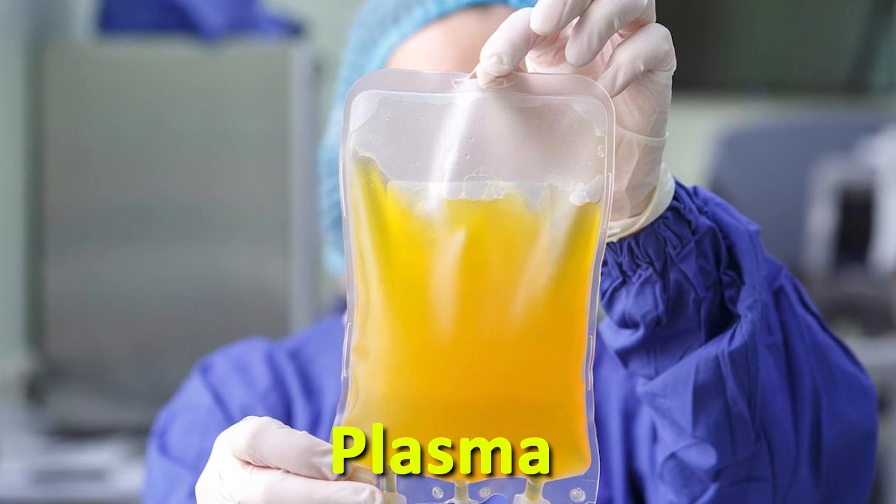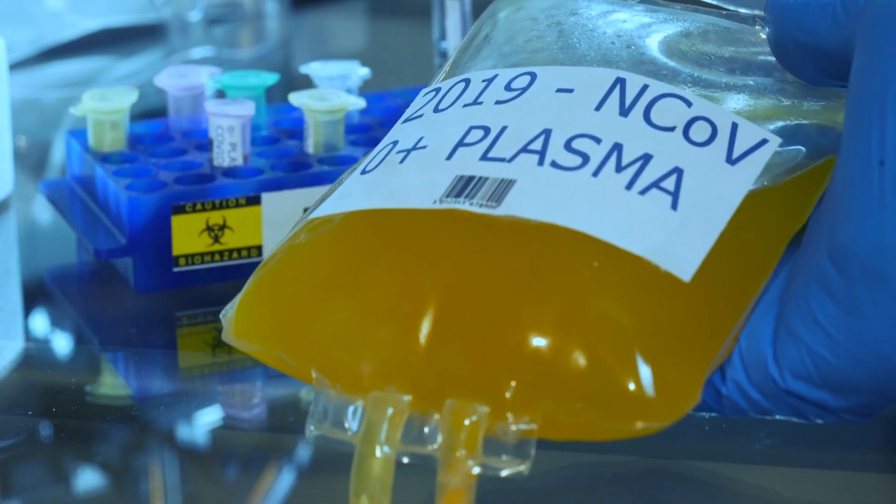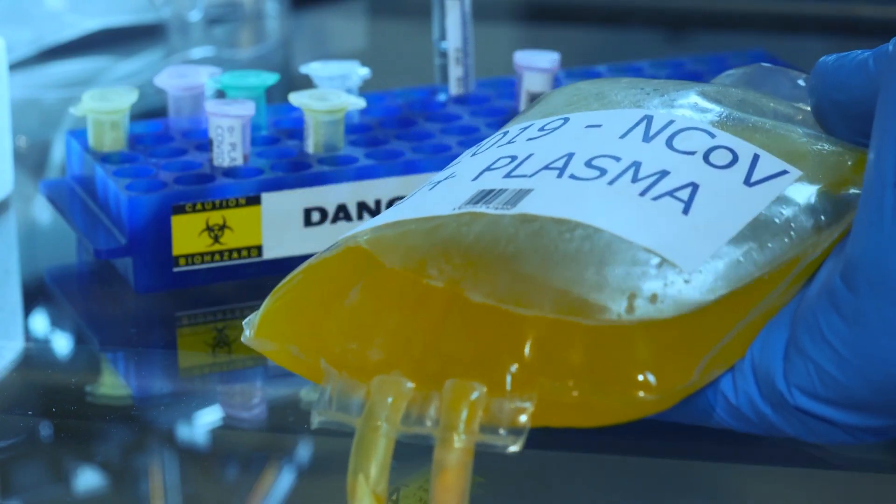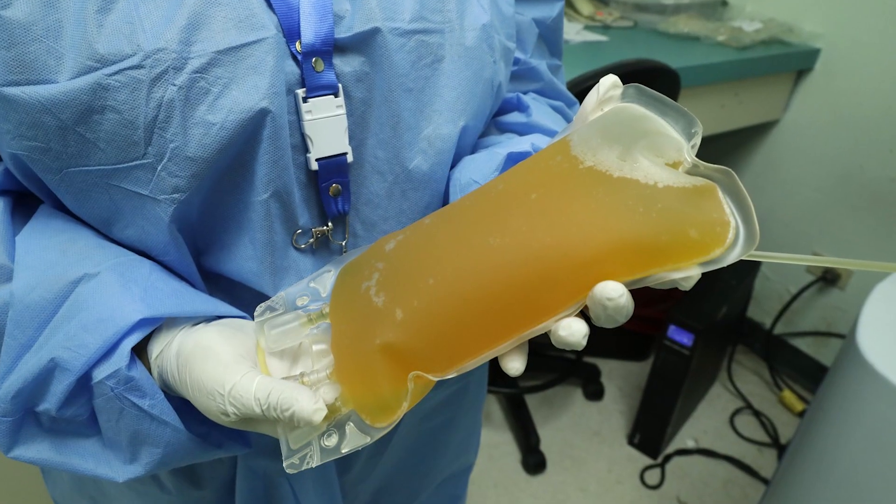And the liquid part is plasma. When plasma is separated from the rest of the blood, it looks like a light yellow liquid.